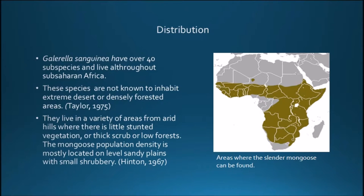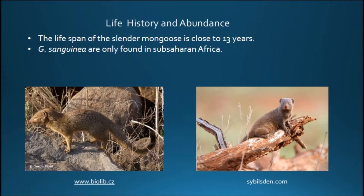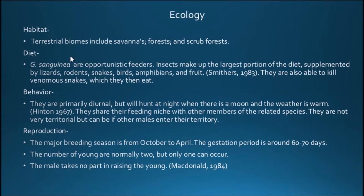Population density is mostly located on level sandy plains with small shrubbery. The lifespan of the slender mongoose is close to 13 years. This particular species is only found in sub-Saharan Africa.